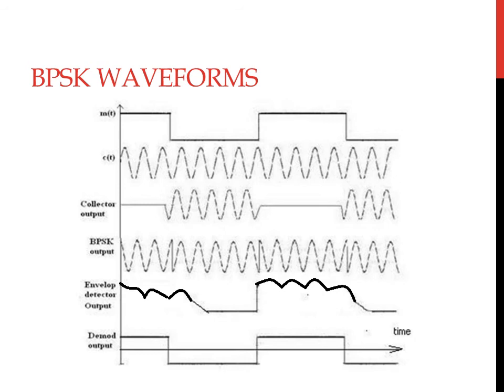Here are the waveforms for BPSK. M(t) is a signal having an amplitude of plus or minus 2.5 volts and C(t) is a signal having an amplitude of plus or minus 3 volts. The collector output voltage is 0 when M(t) is positive and equals C(t) when M(t) is negative. The BPSK output voltage obtained mathematically is minus 1.5 volts. This negative sign indicates the output is inverted with respect to carrier C(t). Whenever there is a transition from positive to negative M(t), the phase of the carrier changes — hence the name Binary Phase Shift Keying.